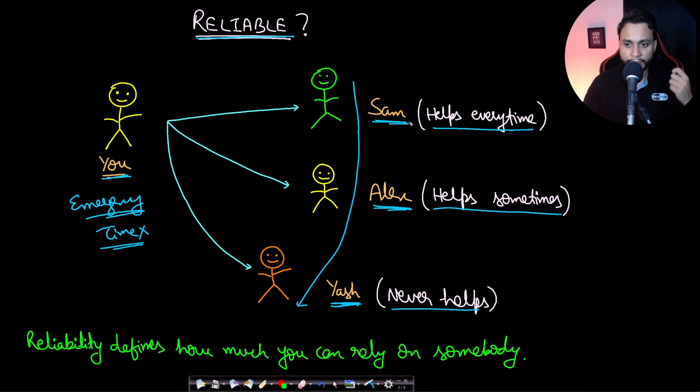If you are in an emergency, you will first ask from the most reliable person. You can see that whoever helps you in your need the most can be considered the most reliable person. Sam will be reliable, Alex will be reliable but not as reliable as Sam, and Yash is not a reliable person. So reliability defines how much you can rely on somebody.